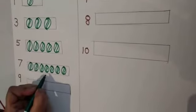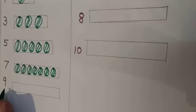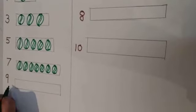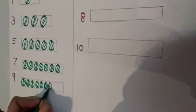How many balls do we have to draw here? Which number is this? Number 9. Very good. So, how many balls do we have to draw here? 9 balls. 1, 2, 3, 4, 5, 6, 7, 8, 9. Let's count it again: 1, 2, 3, 4, 5, 6, 7, 8, 9.